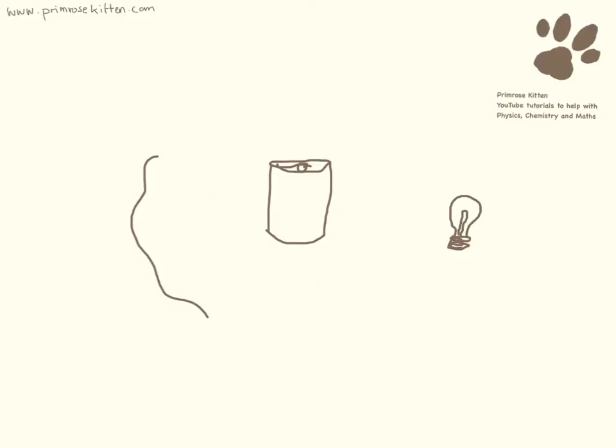So here we have a few things. We have a bulb, we have a battery, and we have a wire here. Now, this looks a bit scruffy, this doesn't look very neat.